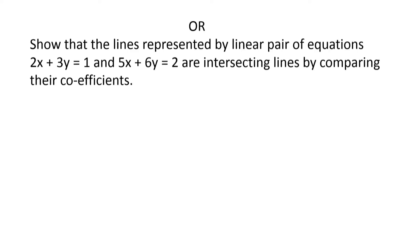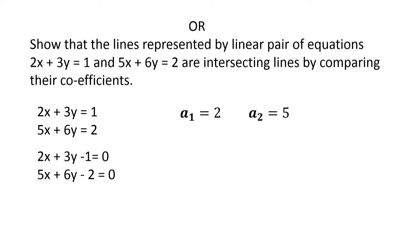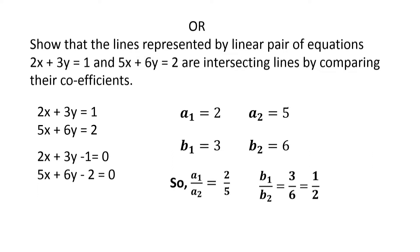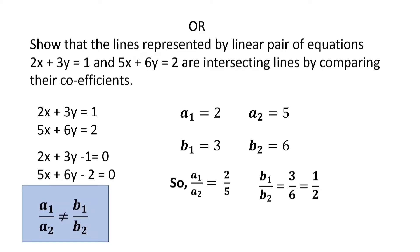There is an internal choice question here: show that the lines represented by the linear equations 2x plus 3y equals 1 and 5x plus 6y equals 2 are intersecting lines by comparing their coefficients. Writing in standard form: 2x plus 3y minus 1 equals 0 and 5x plus 6y minus 2 equals 0. Here a1 is 2, a2 is 5, b1 is 3, b2 is 6. We observe that a1 by a2 is 2 by 5, and b1 by b2 is 3 by 6, that is half. Since a1 by a2 is not equal to b1 by b2, the lines are intersecting and have a unique solution.